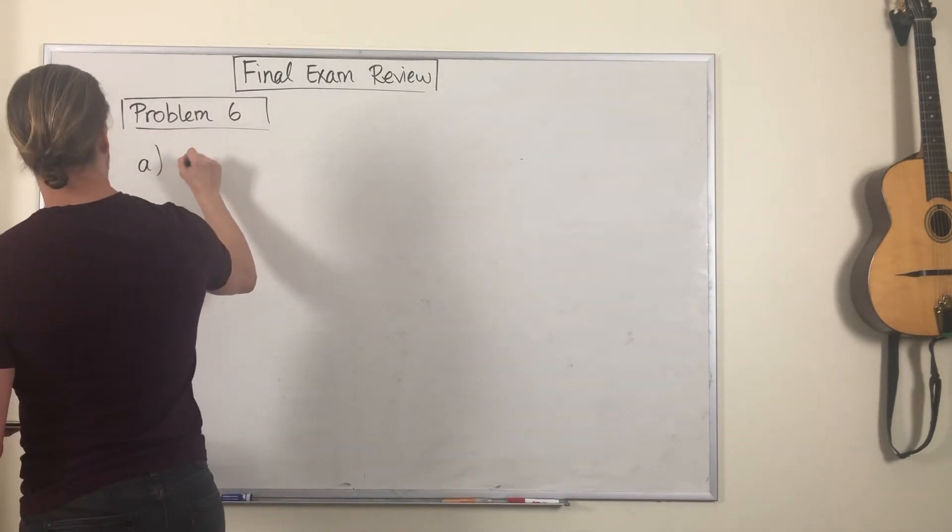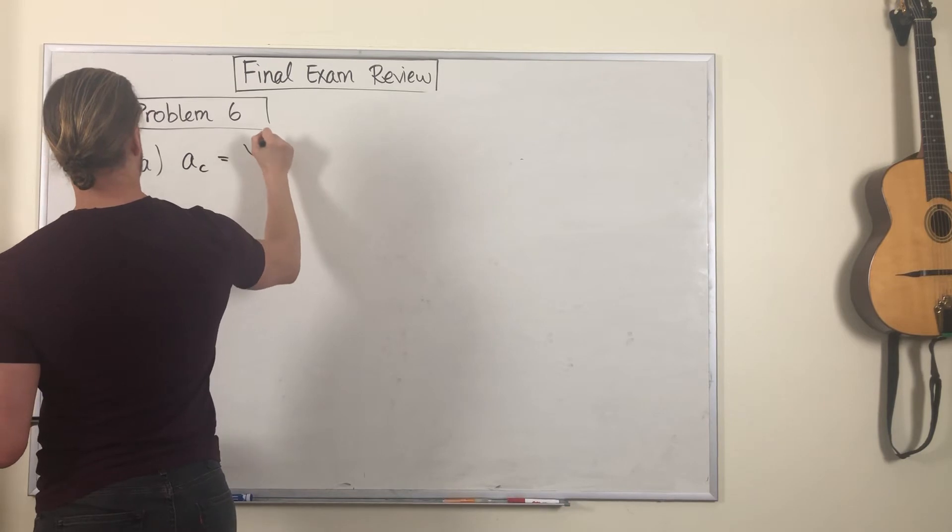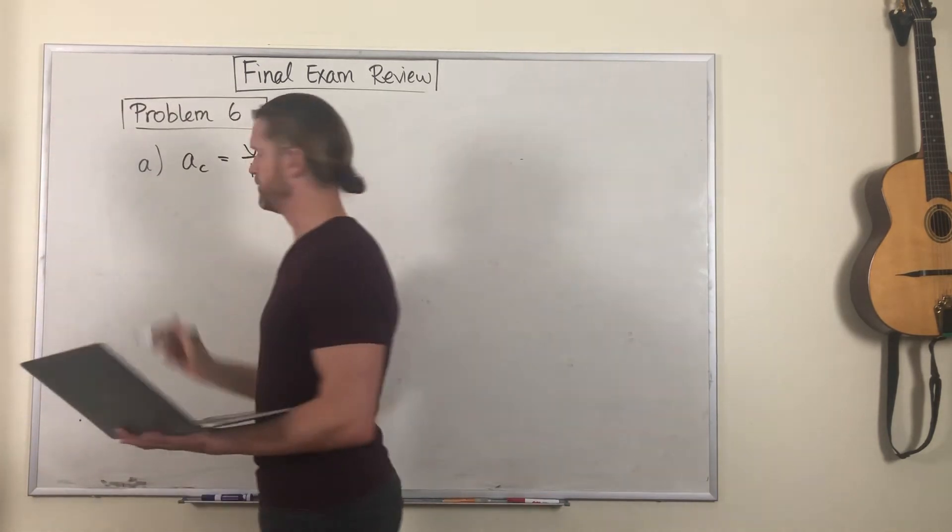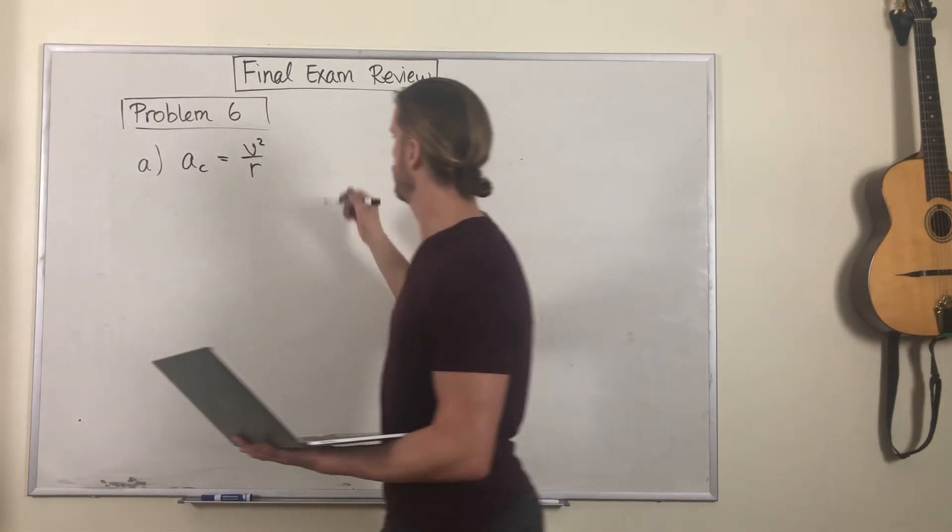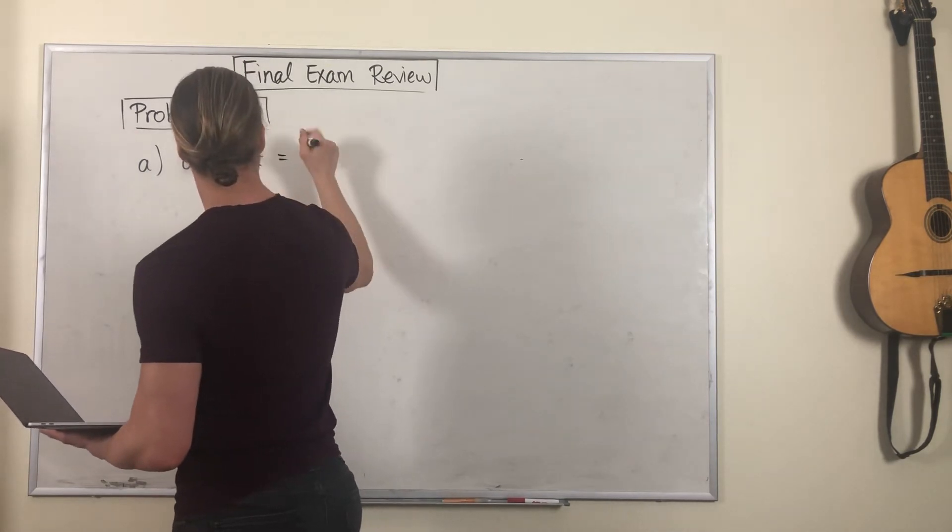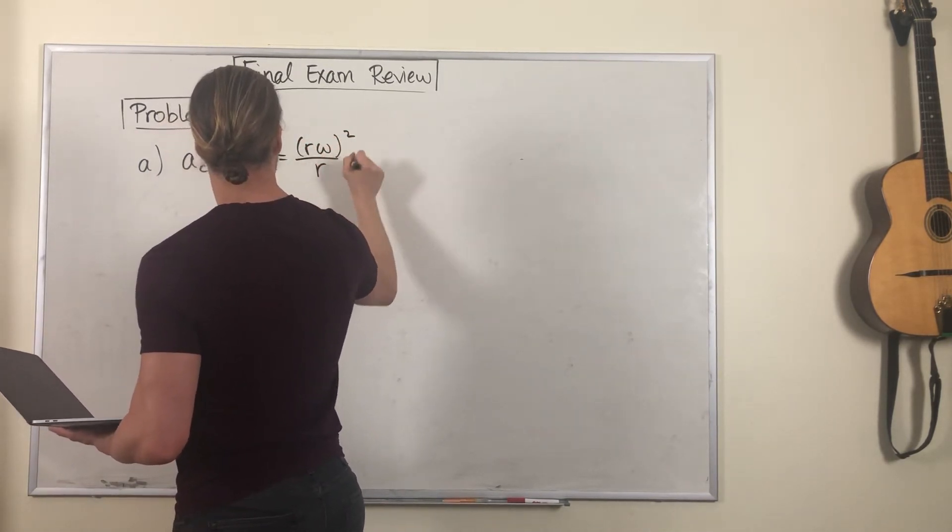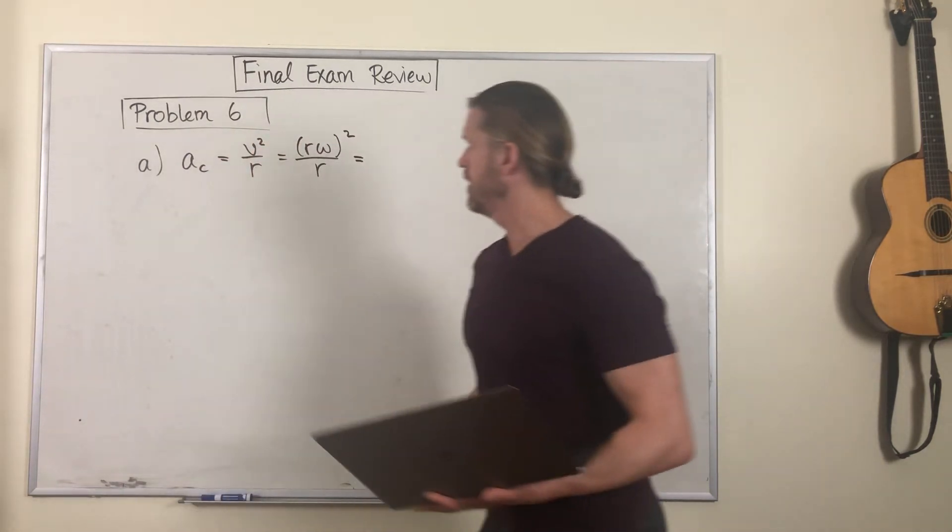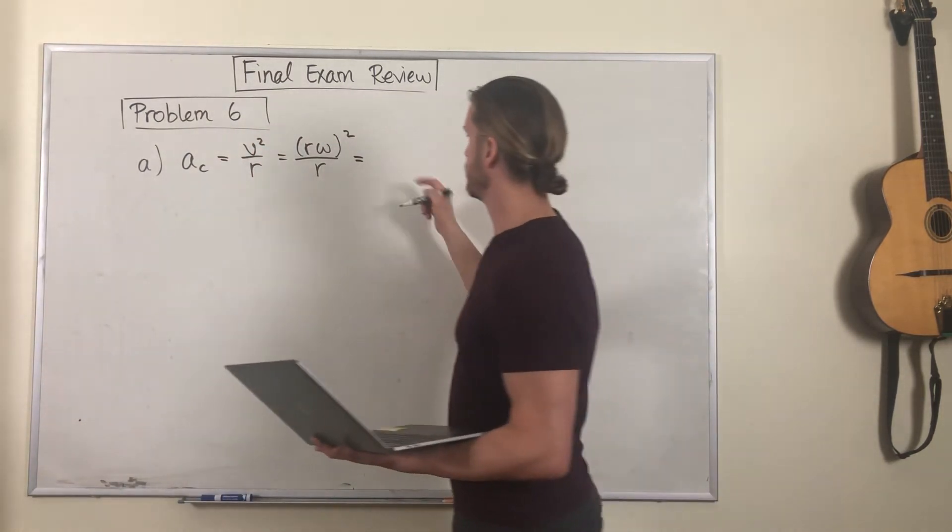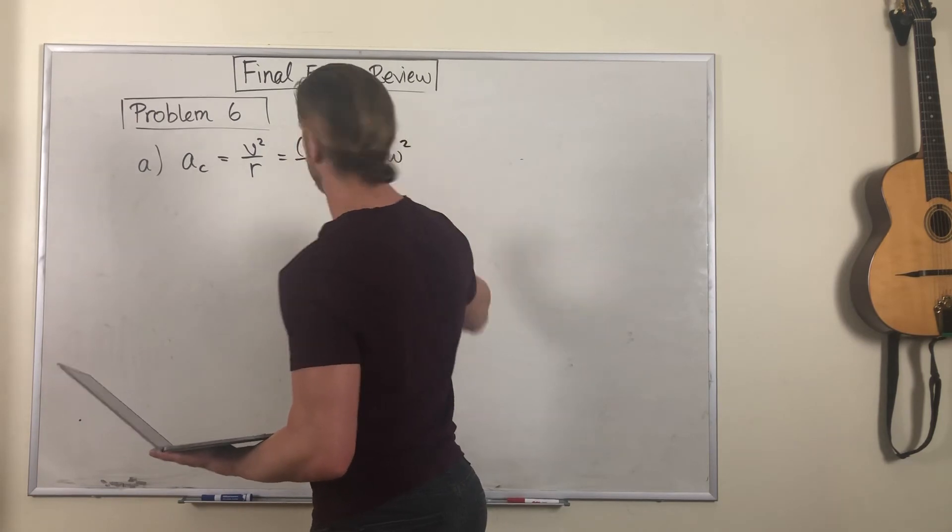Remember, centripetal acceleration is V squared over R, and V is R omega. So you can write centripetal acceleration as R omega squared.